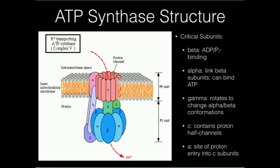The gamma subunit rotates. The alpha and beta subunits do not rotate — they're static. You have to imagine the alpha and beta are just static right there; they don't rotate, they don't move, they're stuck. But the gamma stalk in the middle, which goes to the center of the alpha and beta ring, it rotates. The gamma subunit rotates while the alpha and beta are static. What causes the gamma subunit to rotate? Well, it's because the C subunits also rotate.